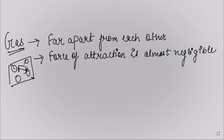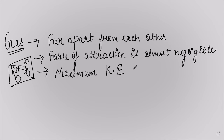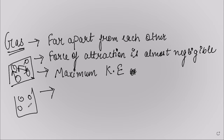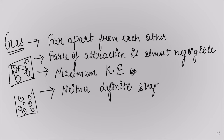Since gas particles have almost no force of attraction, they get enough space to move from one place to another — meaning particles of gases have maximum kinetic energy. Solids have minimum kinetic energy, whereas gases have maximum kinetic energy. When we put gas in a cylinder, it does not have a definite shape, and it also does not have a definite volume — neither definite shape nor definite volume.